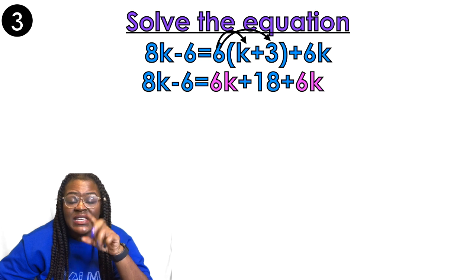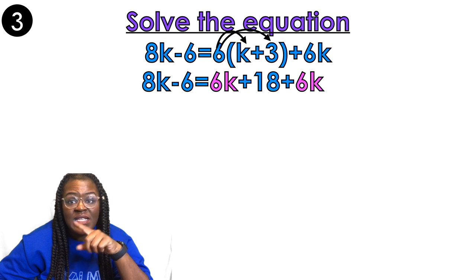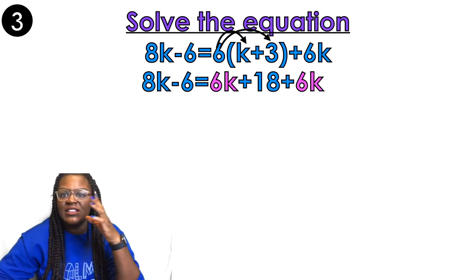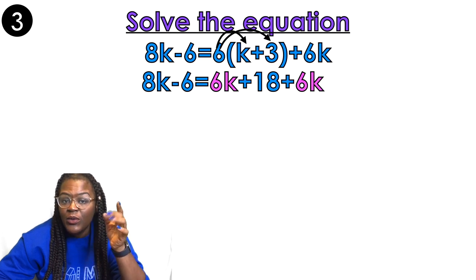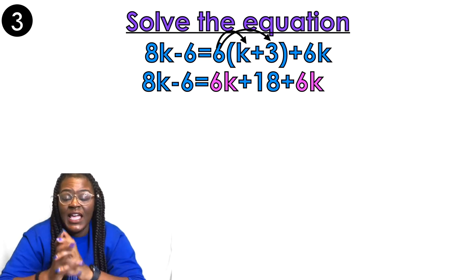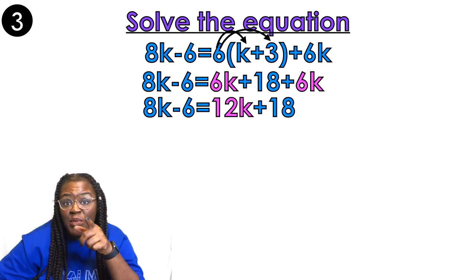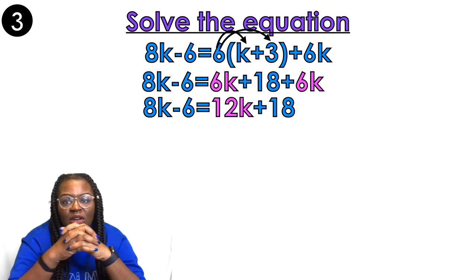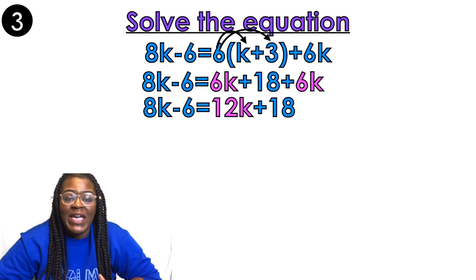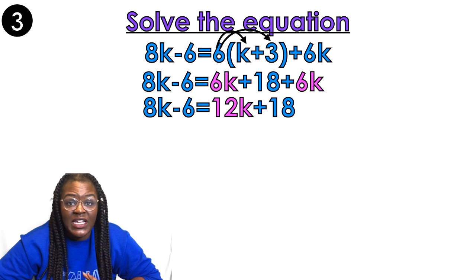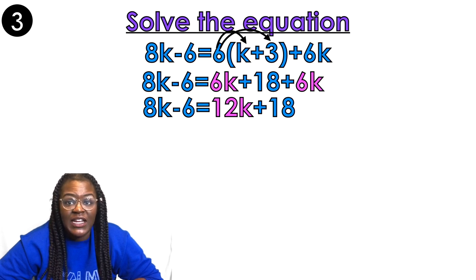On the left-hand side, 8k minus 6 — I can't do anything there. On the other side, I have 6k plus 18 plus 6k. The 6k and the 6k are like terms because they have the same variable, so 6k plus 6k gives me 12k — I highlighted them in pink so you can see. Now my equation has been distributed and like terms combined, so all I have to do is get the variables on the same side, move the constant, and divide by the coefficient.